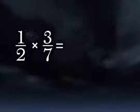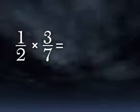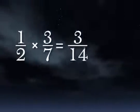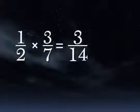Multiplying fractions is easy. All you have to do is multiply laterally. 1 times 3 over 2 times 7. That equals 3 over 14.